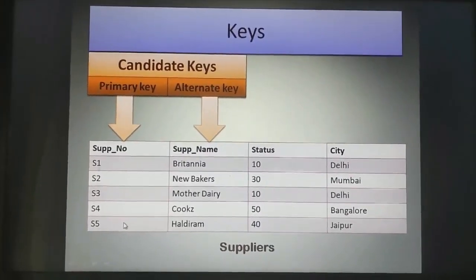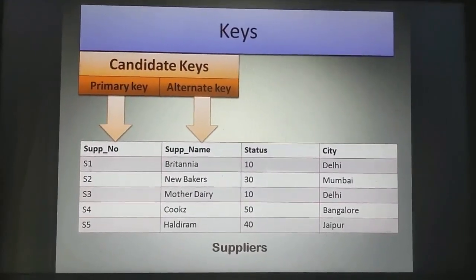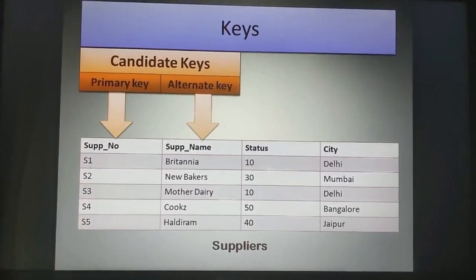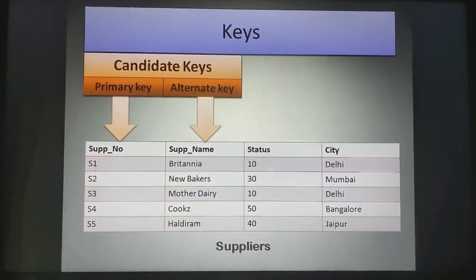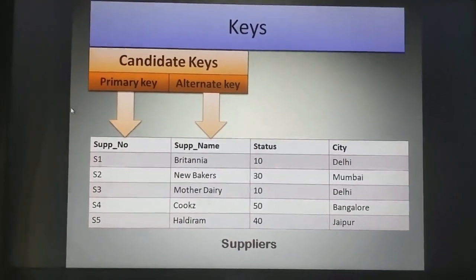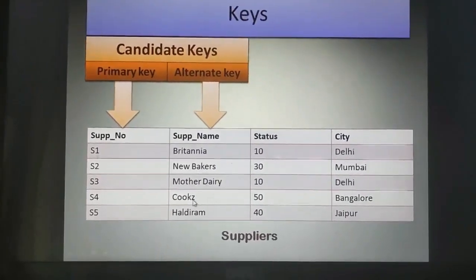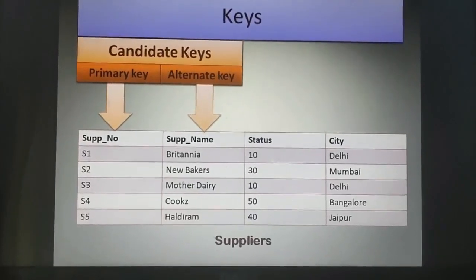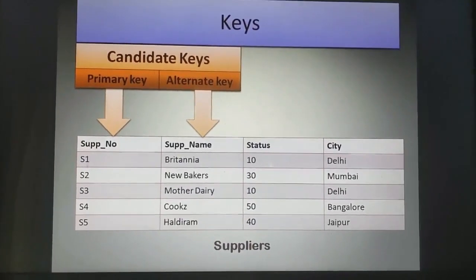Now coming to the keys — what are keys? Keys are basically one or more attributes that uniquely identify any record of a table. Clearly, as per the rules and requirements, only 2 columns are fulfilling that: supplier number and supplier name, which do not have any repeated values and are uniquely identifying the records of the table.